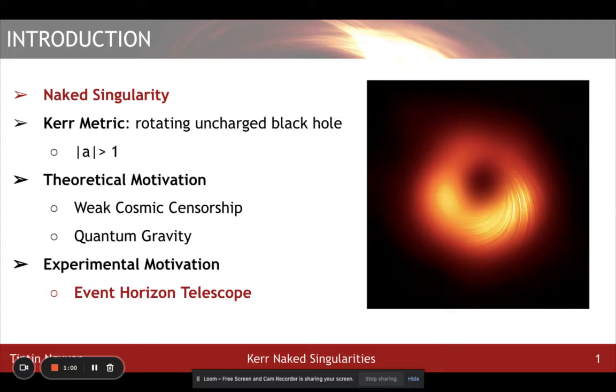Penrose cosmic censorship conjecture predicts that all singularities need to be hidden from an observer outside by an event horizon. But there is no conclusive mathematical proof to validate this. Thus, observing naked singularities would have important implications for physicists to revise what they thought the limit to a black hole spin.